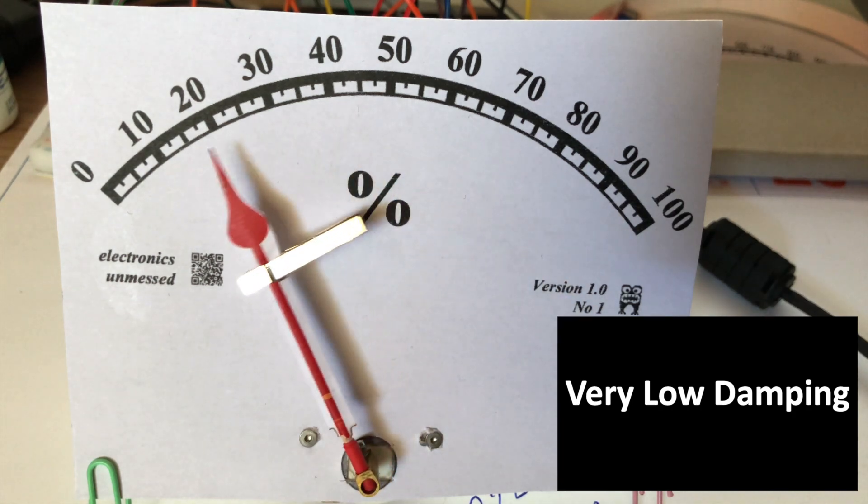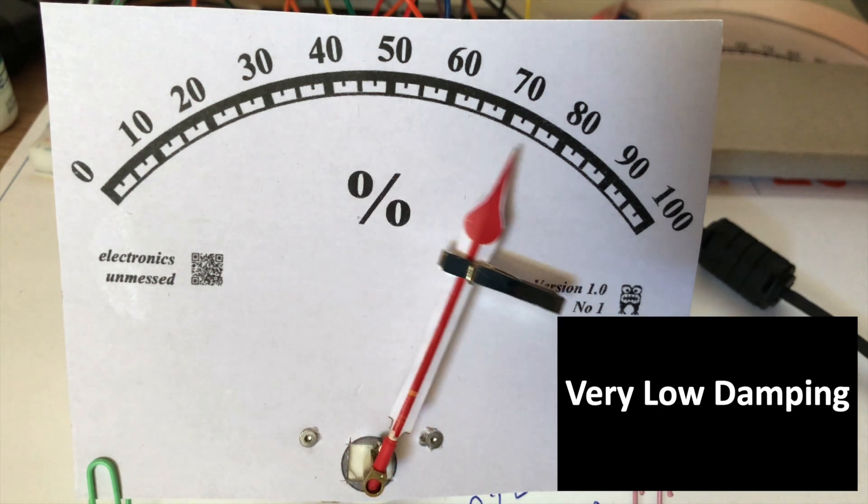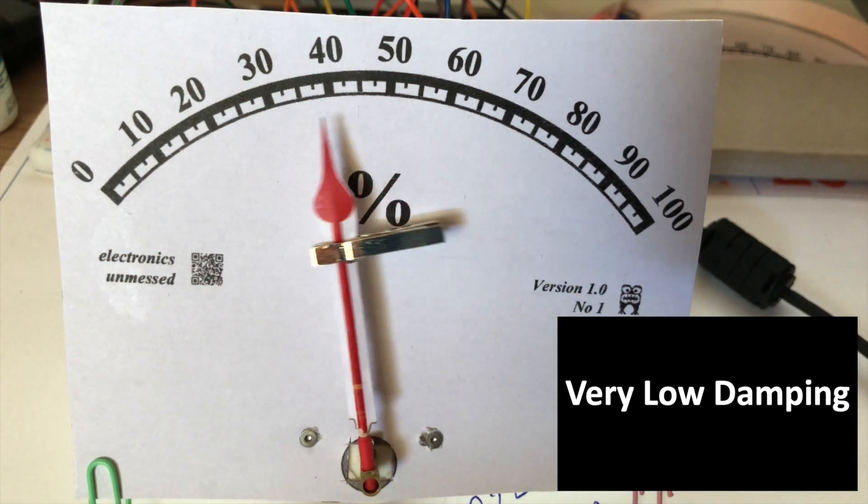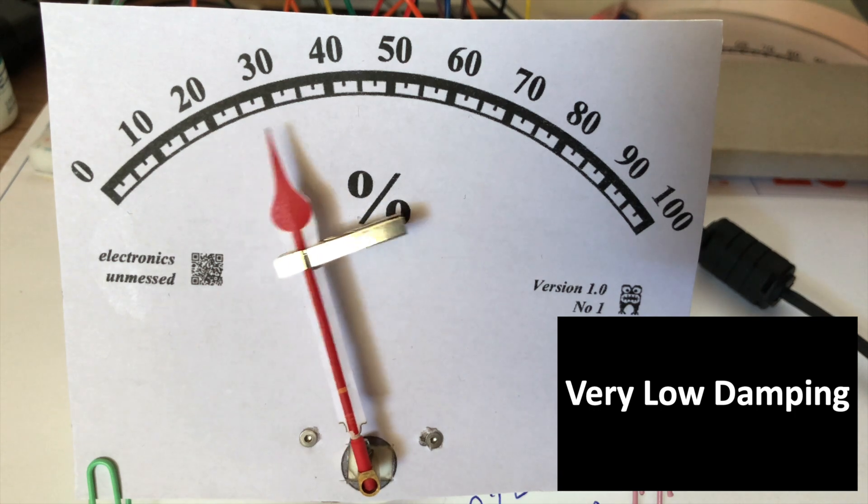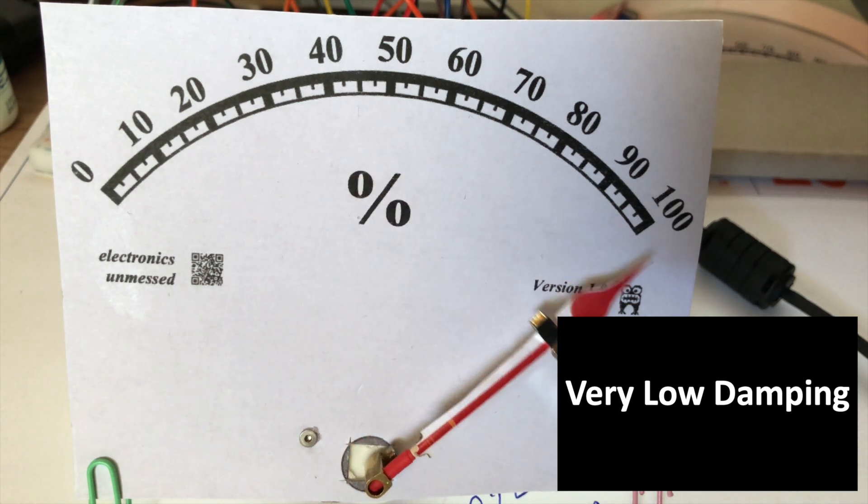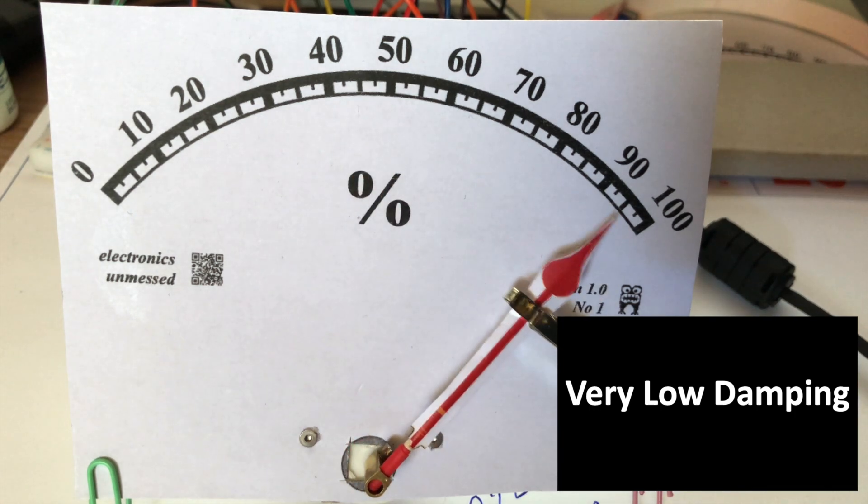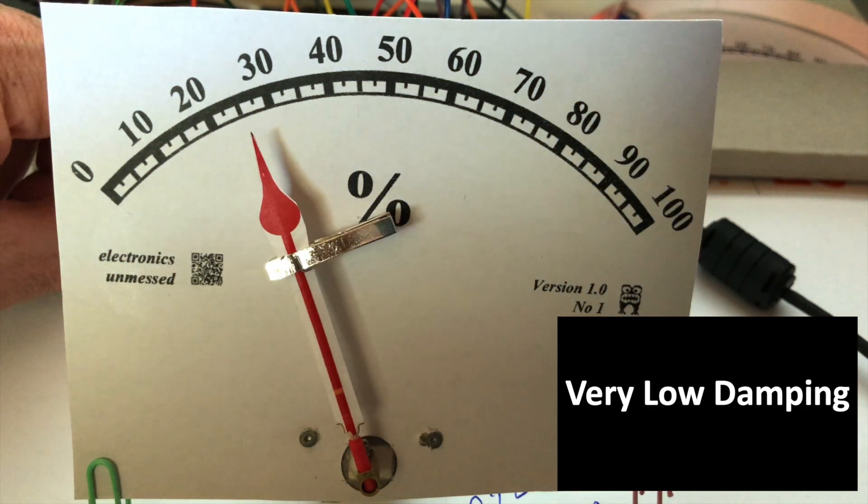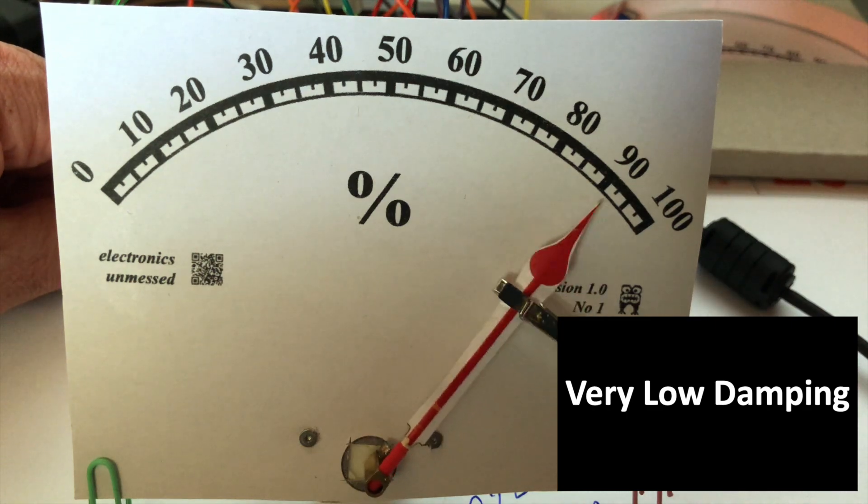In the first test, the pointer moves with strong overshooting oscillations. I set a very low damping here. The pointer is quite large, so the rapid oscillation looks a bit unnatural. I could set the resonant frequency a bit lower, so that it looks more natural.